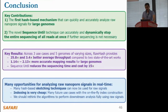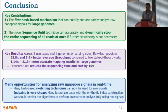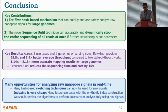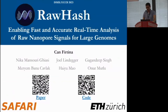We believe that many opportunities lie ahead for analyzing raw nanopore signals in real time. For example, we can now use many existing hash-based sketching techniques for raw signals now that we can use hash values to identify similarities between them. Indexing in RawHash is very cheap, meaning there can be many new use cases by enabling on-the-fly index construction. In general, we should strengthen algorithms to perform downstream analysis fully using raw signals without necessarily base-calling them, in order to use their rich information and reduce analysis latency, sequencing time, and cost. With that, I'll conclude my talk and I'm happy to take questions.